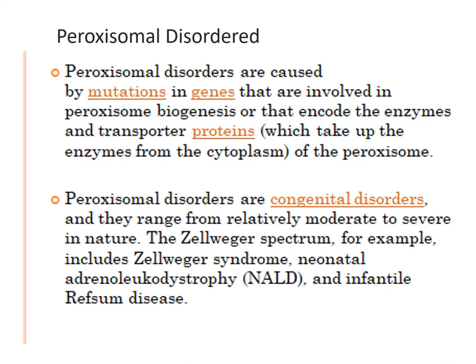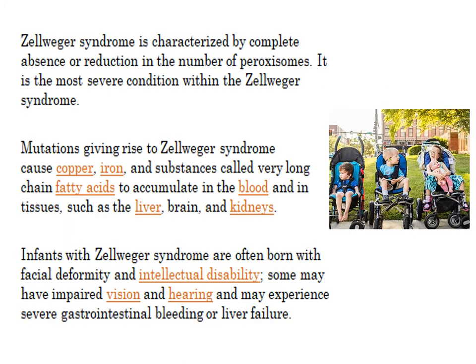The Zellweger spectrum, for example, includes Zellweger syndrome and infantile diseases. These conditions cause copper, iron, and a substance called very long chain fatty acids to accumulate in the blood and in tissues such as the liver, brain, and kidneys. Infants with Zellweger syndrome are often born with facial deformity and intellectual disability; some may have impaired vision and hearing and may experience severe gastrointestinal bleeding or liver failure.